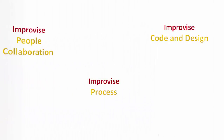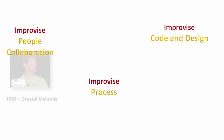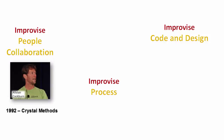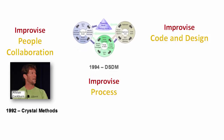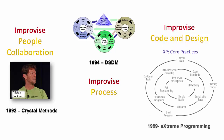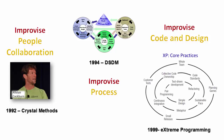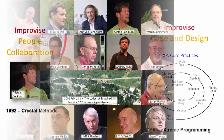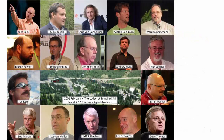In order to improve the success rate, in the 90s people started experimenting with process models, and many came forward with new methodologies. For example, Crystal Methods from Alistair Cockburn primarily focused on the people aspect. Dynamic System Development Methods (DSDM), first released in 1994, originally sought to provide discipline to rapid application development. Extreme Programming focused on the engineering aspect of code.